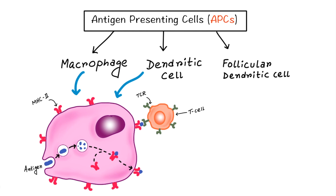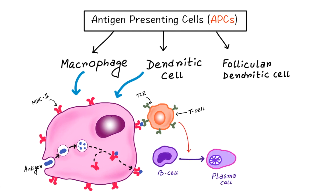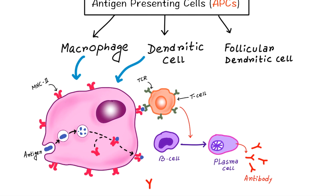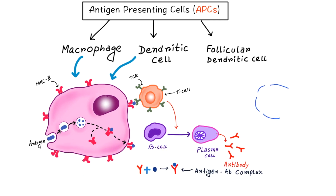The processed antigen is presented to the T helper cell, which then helps the B cell convert into a plasma cell. The plasma cell makes antibody against the antigen. Once antigen binds with the antibody, they form an antigen-antibody complex, which is then captured by the macrophage and the antigen is destroyed.